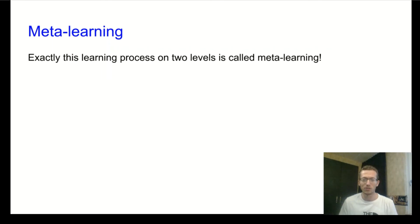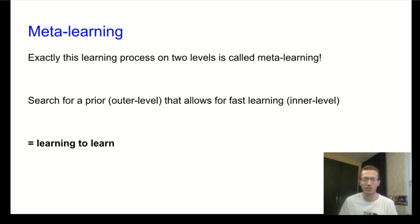So we learn on two levels. On the outer level, we search for a prior that allows for fast learning on the inner level. And this is called learning to learn, which is the same thing as meta-learning.